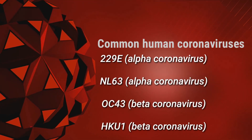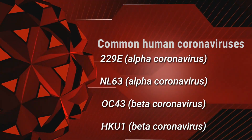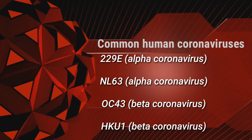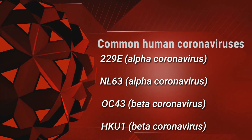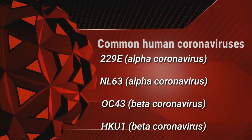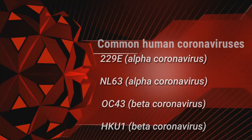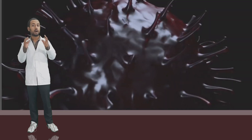The four common coronaviruses which infect humans include: 229E alpha coronavirus, NL63 alpha coronavirus, OC43 beta coronavirus, and HKU1 beta coronavirus. These four cause common cold-like symptoms that can be treated naturally, so they are not a serious problem if you are infected with any of them.